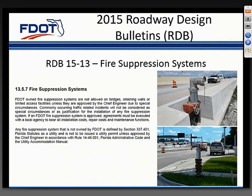RDOT Design Bulletin 15-13 incorporated new policy regarding the use of fire suppression systems on department-owned limited access facilities, bridges, and retaining walls. The department determined that details for standpipes, valves, and hydrants used on past projects for fire suppression systems located within traffic railings and roadway barriers present significant snag hazards for errant vehicles and are not crash-worthy. The photos on this slide illustrate the scenarios this section is meant to avoid. This new section, Section 13.5.7 in Chapter 13 of Volume 1, basically states that if you want to install a fire suppression system, you'll need approval of the chief engineer.